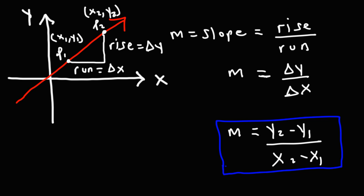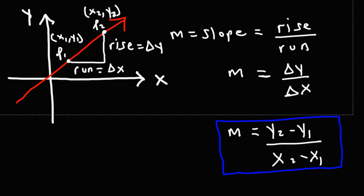So we could use that formula to calculate the slope of any line as long as we know two points that are on that line. So here's an example.